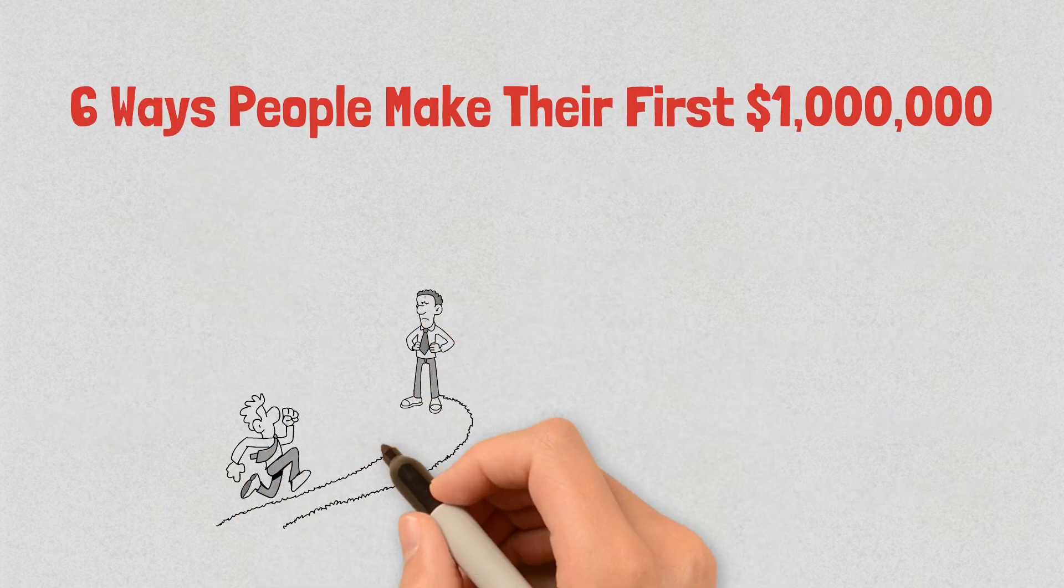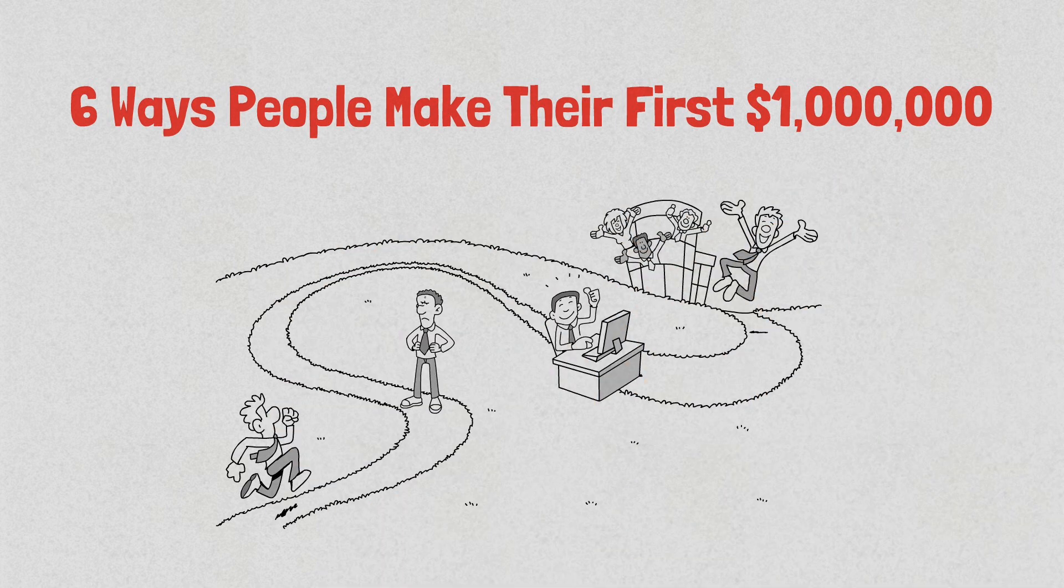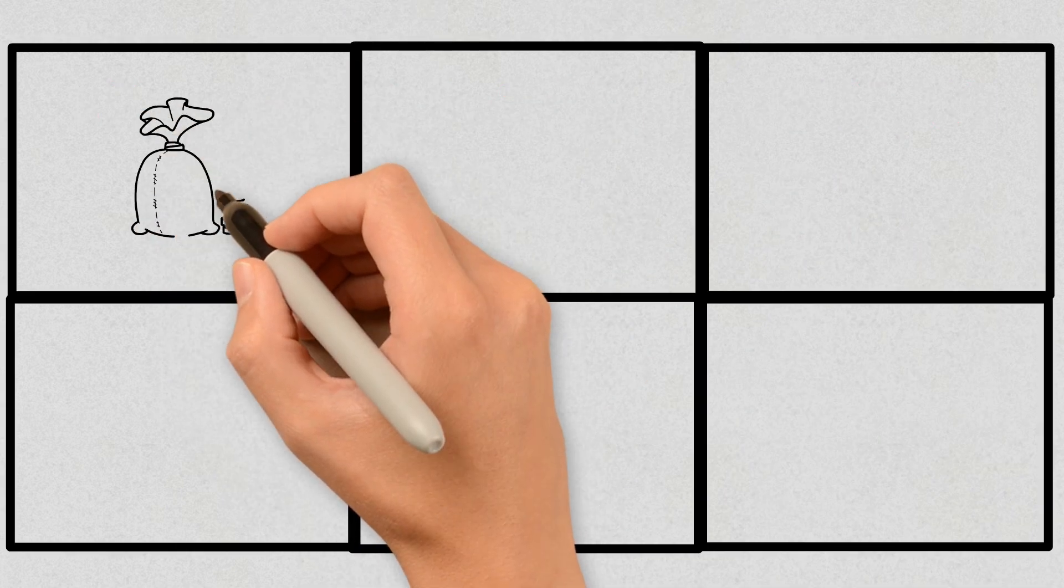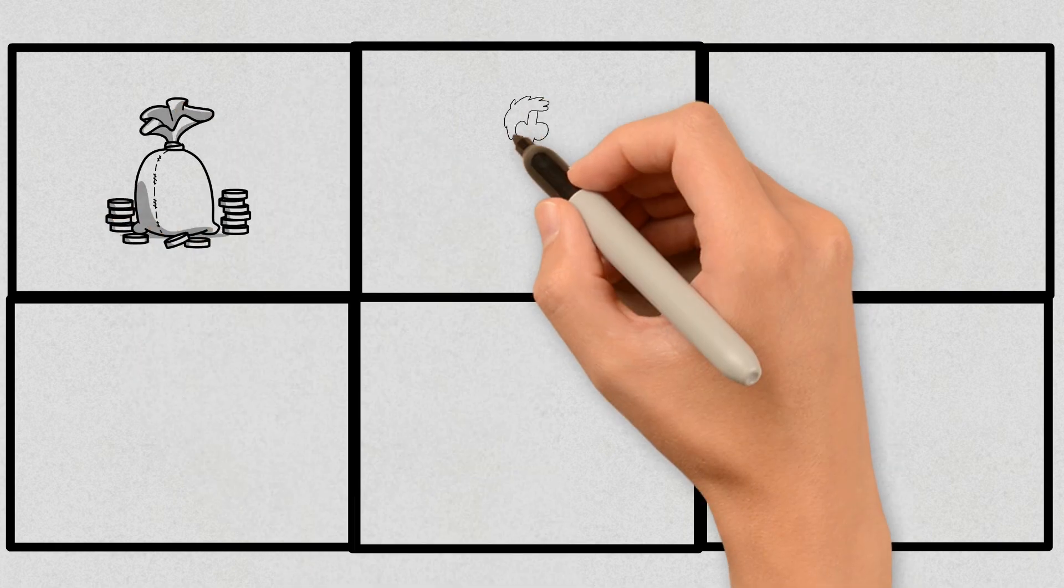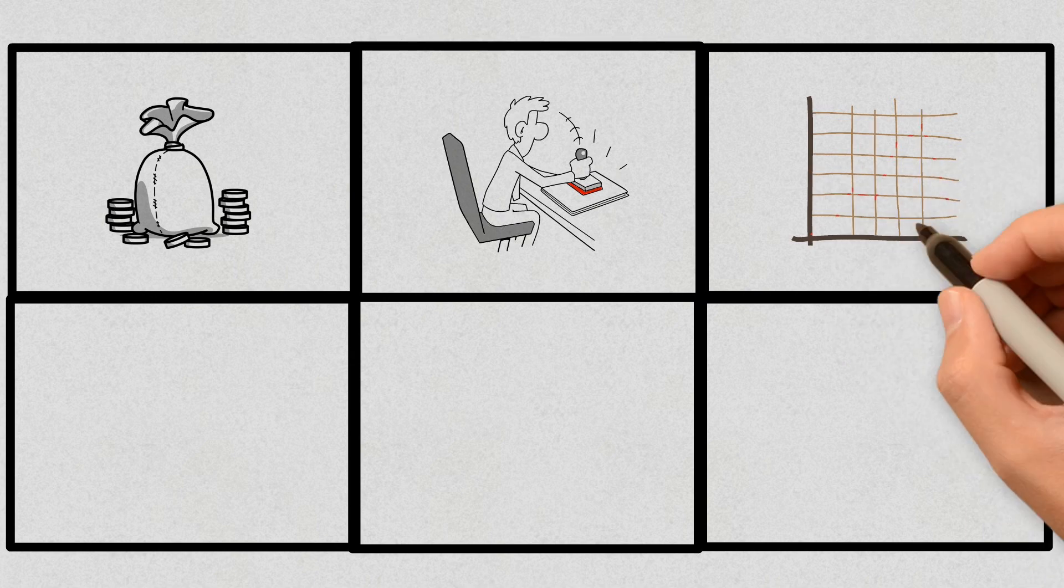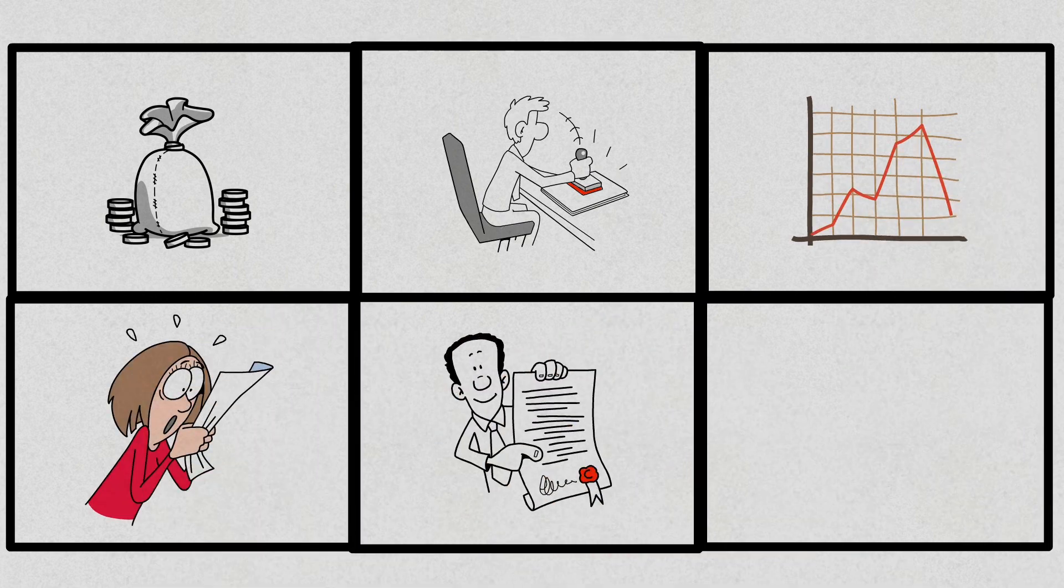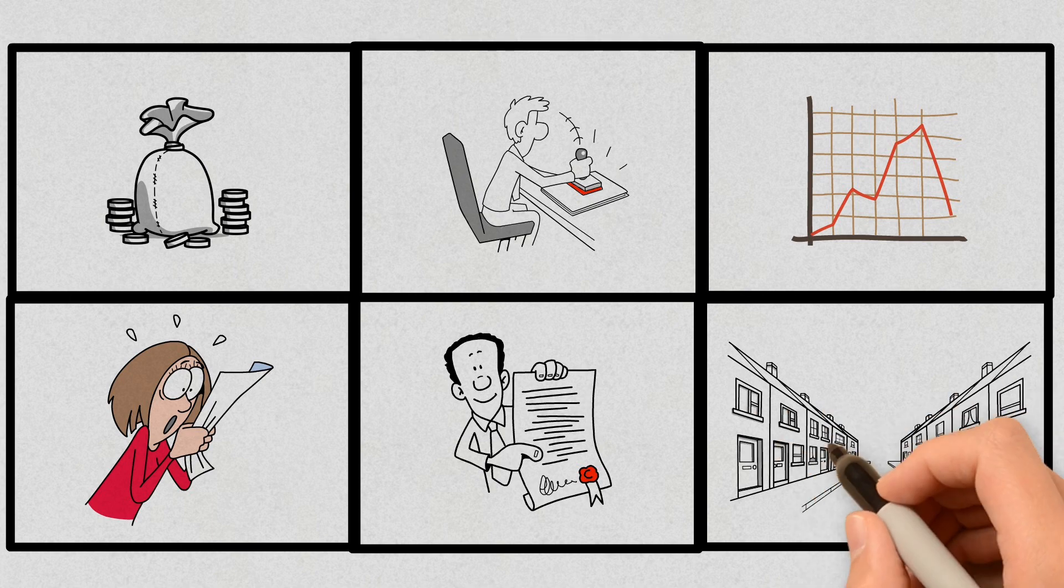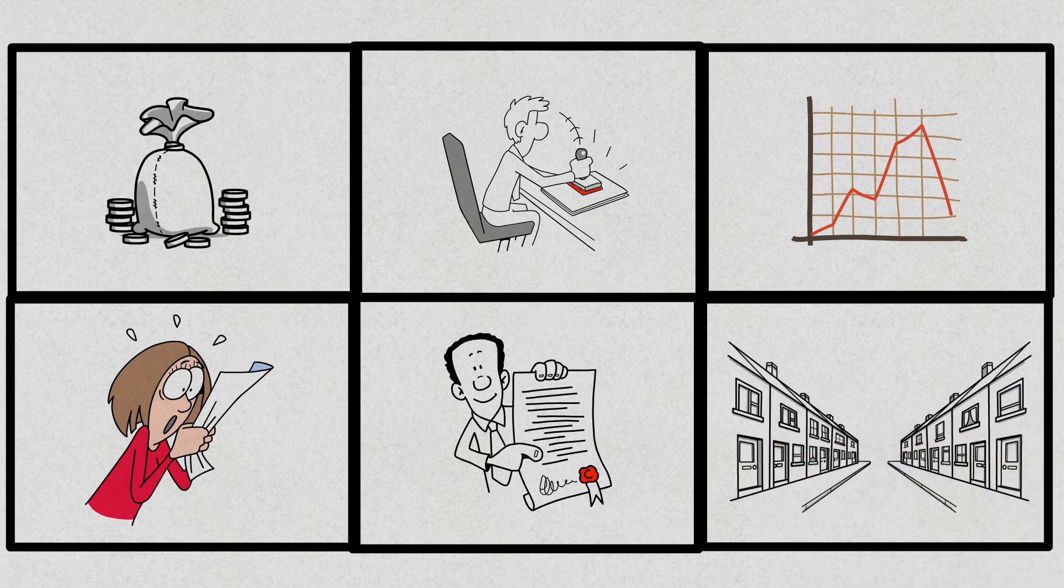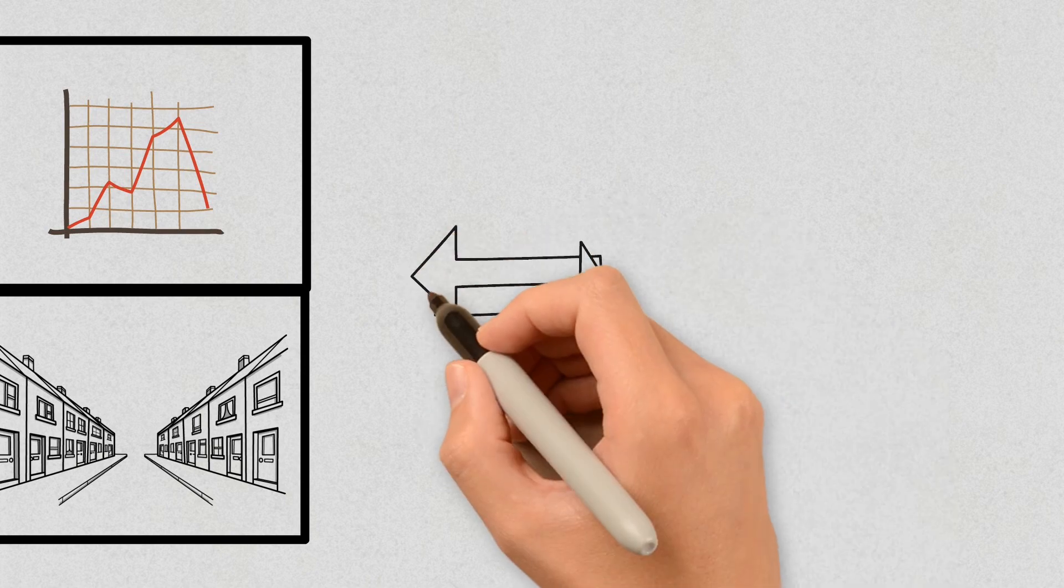There you have it. Six diverse pathways that individuals have taken to make their first million dollars. Whether it's through disciplined saving and investing in mutual funds, getting in on the ground floor of a promising startup, timing the stock market perfectly, receiving a family inheritance, excelling in high commission jobs, or building a lucrative real estate portfolio. Each method has its own set of challenges and rewards. What's crucial here is to recognize that,